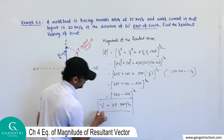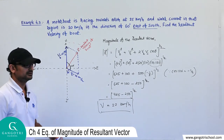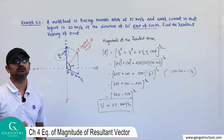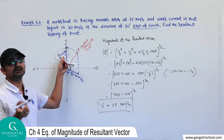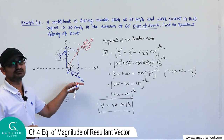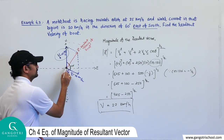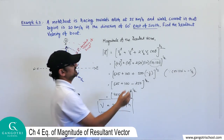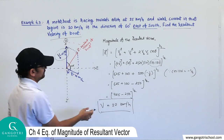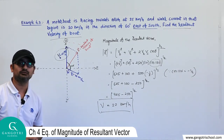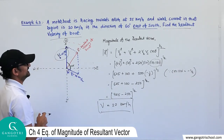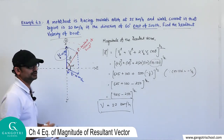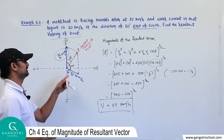The resultant velocity of the boat is approximately 22 km/h. Note that the boat was originally moving north at 25 km/h, but due to the water current it now moves in a different direction with a speed of 22 km/h. You can also find the direction by calculating the angle this resultant makes with the velocity of the boat using trigonometry.